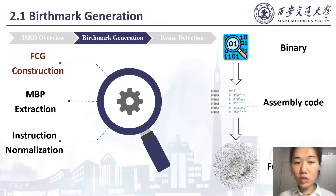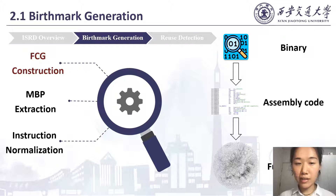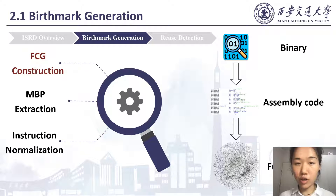In order to construct the function call graph, we first use the binaries as the input. Then, with disassembly tools, we are able to get the assembled code of the binary. After that, based on the extracted callers and callees from the assembly code, we distill the program semantics into a function call graph. In this graph, each node denotes a function and each edge denotes a function call.